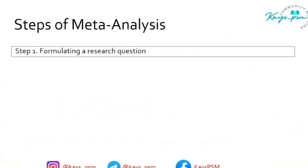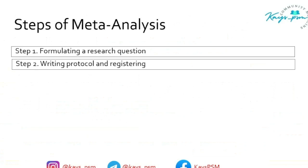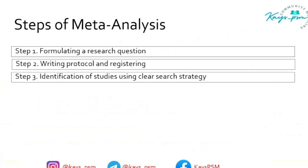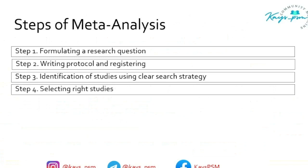What are the steps of meta-analysis? Number one: formulating a research question — I should know what I really want and why I am doing this meta-analysis. Then I will write a protocol and register it, declaring that I am doing a meta-analysis on this topic. After registering, I will identify studies using clear search strategies — similar to how you use filters on Amazon or Flipkart when shopping online.